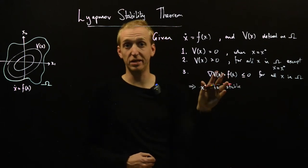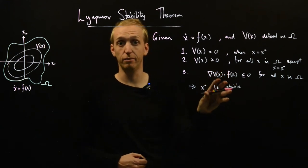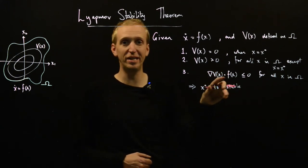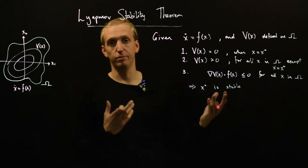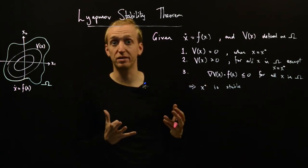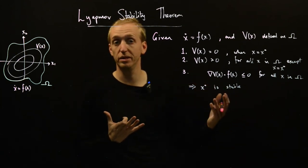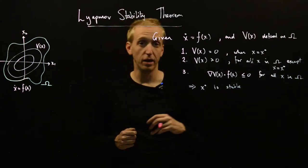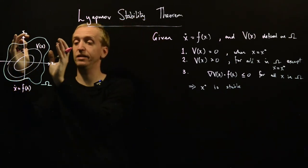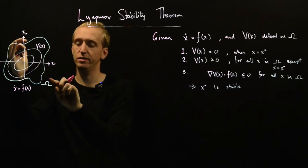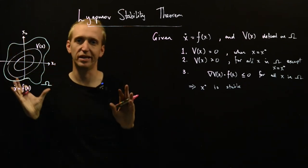And so what is x dot? Well, x dot is just f of x. So if we look at the dot product of the gradient of v with x dot, if it's less than or equal to 0 for all x in omega, then this implies that x star is stable. And remember that stability was our weakest stable notion.